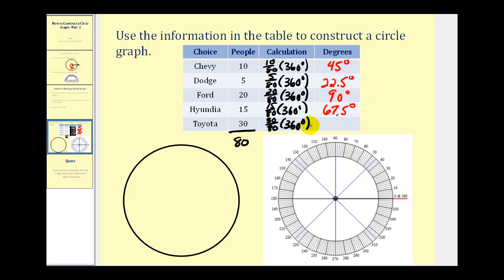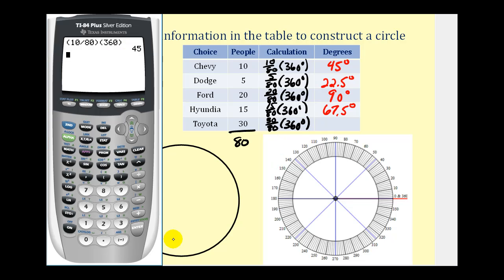And let's go ahead and use our calculator for this last one. If we press second enter, I can just change the first fraction. So I'll change this to 30 eightieths. It would be 135 degrees.